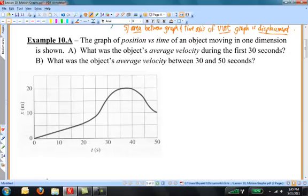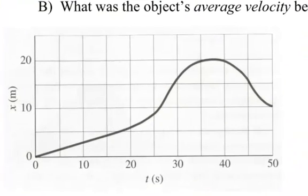Example 10.a. The graph of position versus time of an object moving in one dimension is shown. What was the object's average velocity during the first 30 seconds? And b, what was the object's average velocity between 30 and 50 seconds? How are we going to approach this problem? First of all, let's look at the two times that they want us to examine. In part a, we're looking during the first 30 seconds. So, I want to figure out where those two points in time are.